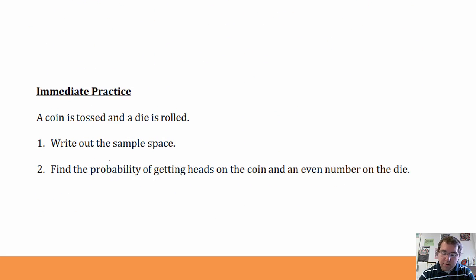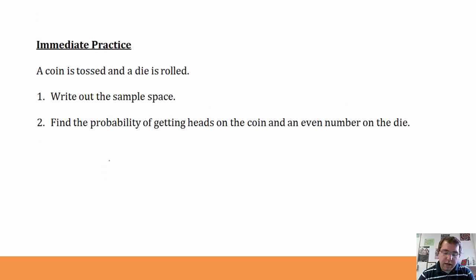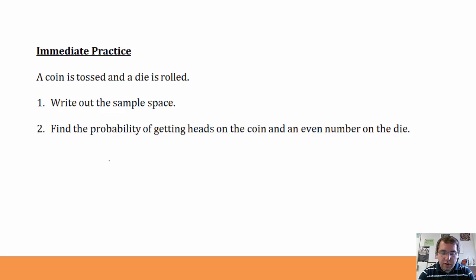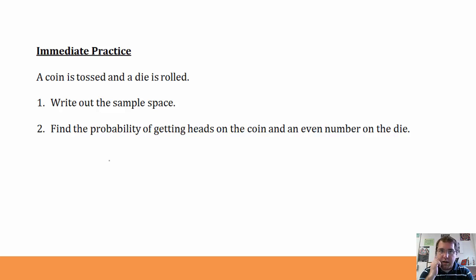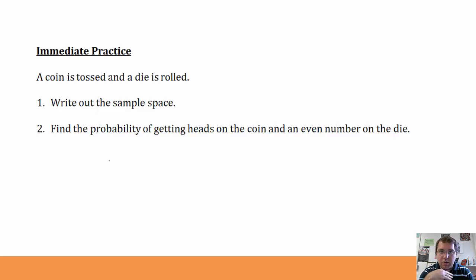Here are your immediate practice problems. A coin is tossed and a die is rolled. Write out the sample space as ordered pairs, where the first element is the result of the coin toss and the second is the result of the die roll. Then find the probability of getting heads on the coin and an even number on the die — just count the elements in your sample space that give you that result, divided by the total number of elements. That is the end of sections 15.8 and 15.9.